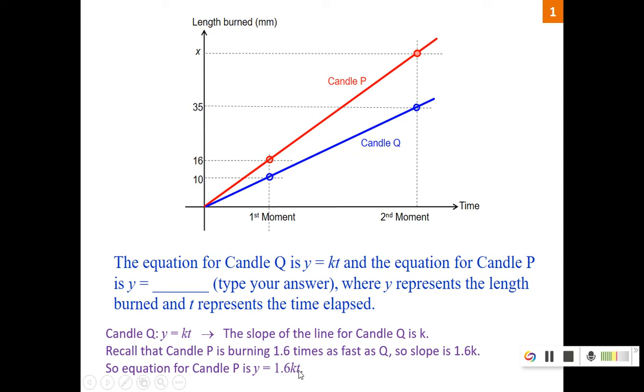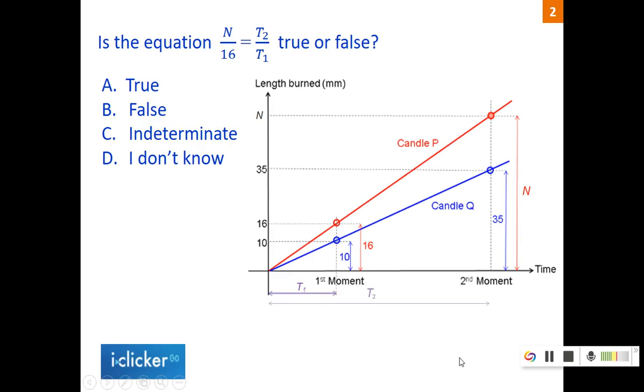The m is 1.6k. So that means the equation of the line for candle P will be y equals 1.6kt. t is like the x. 1.6k is the slope, the m. So I hope this helps.